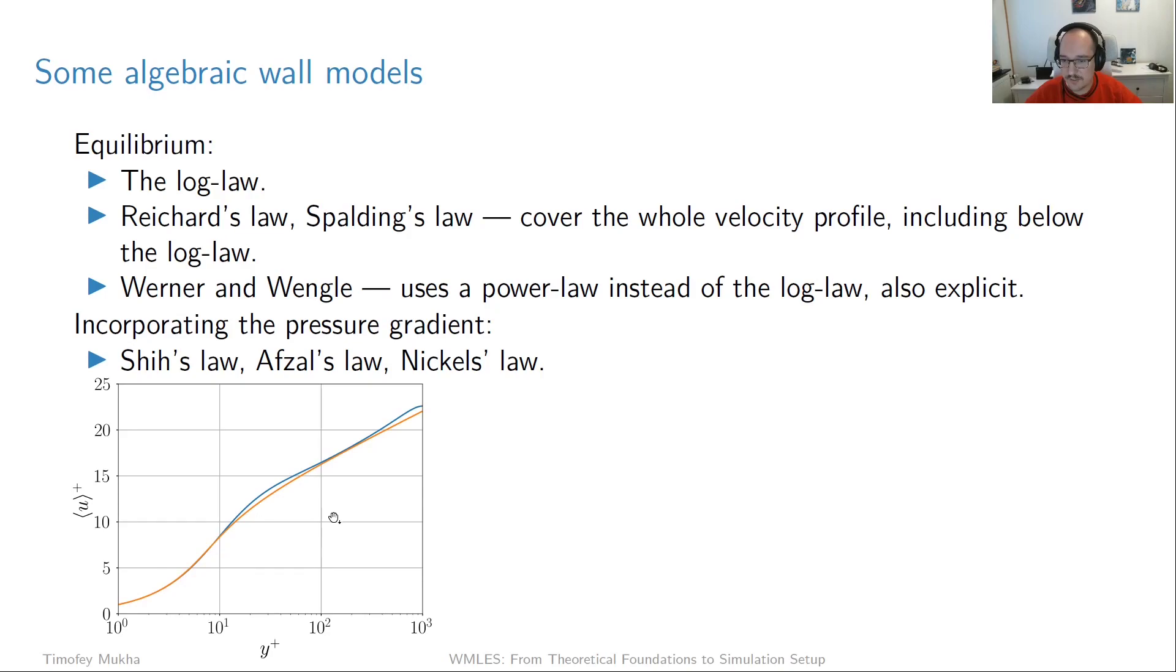So here's a picture. This is Spalding's law versus DNS. So the blue line is DNS of, I think this is channel flow. And then the orange line is the Spalding law. So you can see that it's exactly straight here, approximating the log law. And then it connects somehow to this linear region where it's of course exact. So it's a pretty good approximation. Reichardt's law is pretty much the same thing.